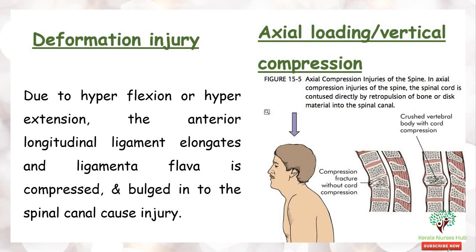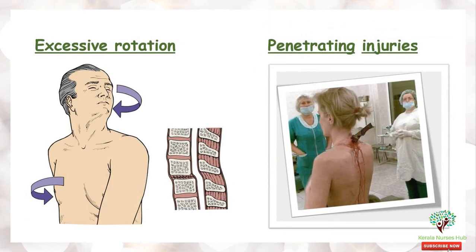In the case of axial loading as well as vertical compression, the spinal cord is injured directly by the retroflexion of bone or disc material into the spinal canal. In the case of penetrating injuries, these can cause direct damage to the spinal cord because of the direct injuries.